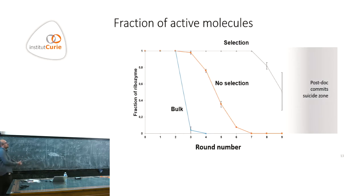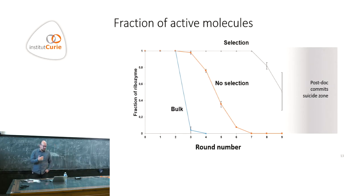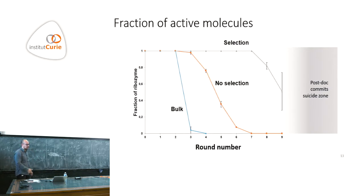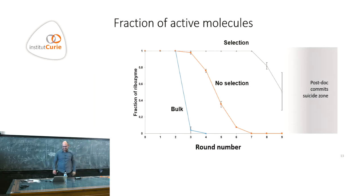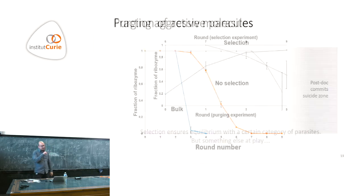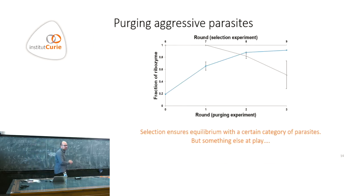The experiment with selection did not work as expected initially. What we discovered is that this was because the protocol was run at constant total RNA mass. As more and more parasites appeared, the mass of each object was smaller and smaller, so more and more molecules were encapsulated at the beginning of each round — the lambda parameter was increasing during the experiment. If you rerun the experiment by controlling lambda, you can save the system.